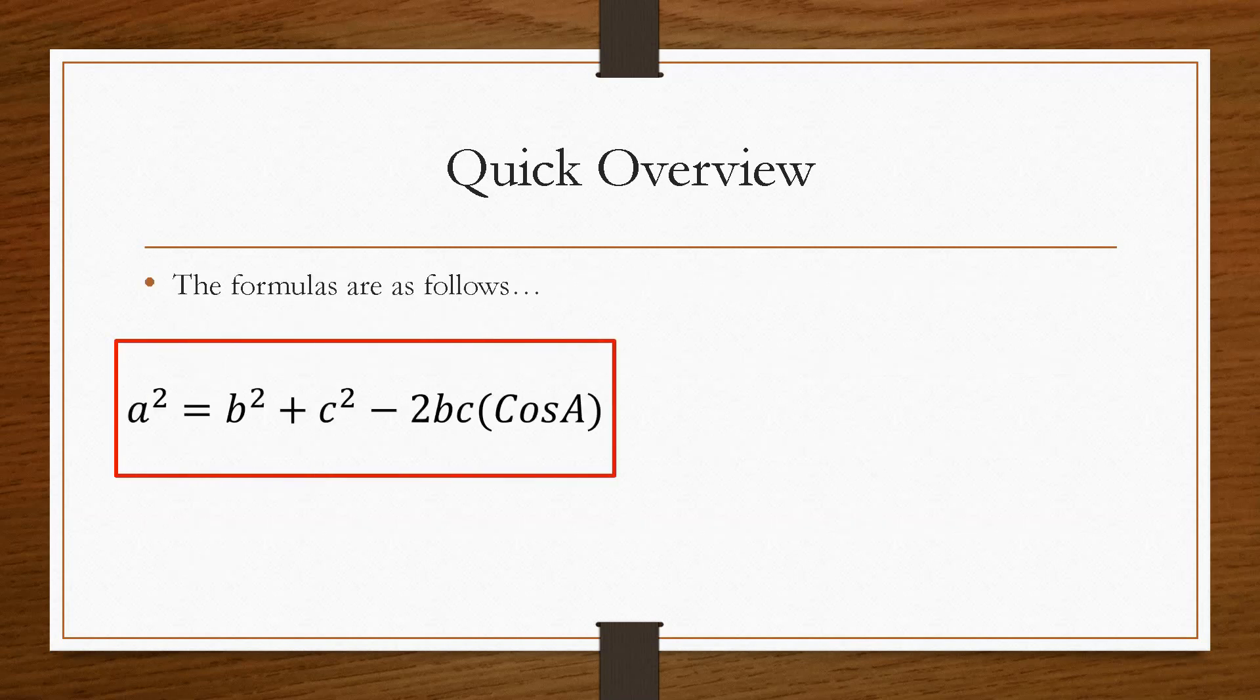So the two formulas are: one is a squared equals b squared plus c squared minus 2bc cos A. Now this is very similar to Pythagoras. However, it is this term here that brings it to a trigonometric function because this takes into account angles that are not 90 degrees.